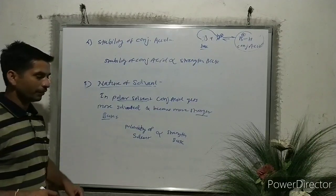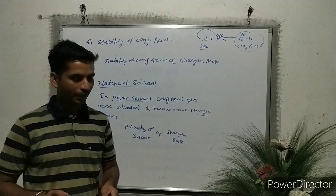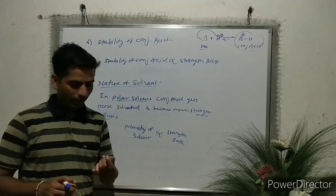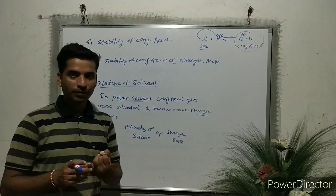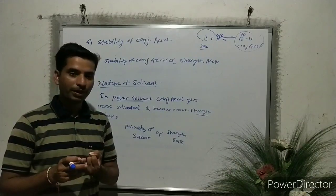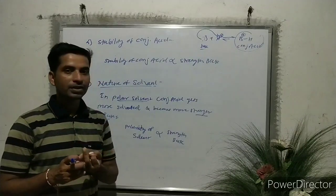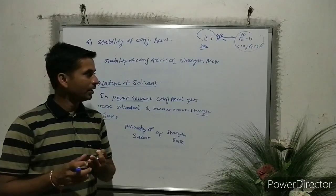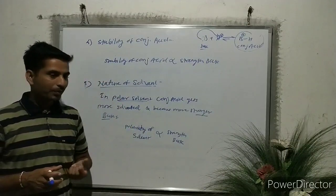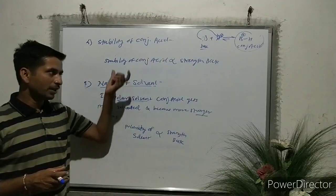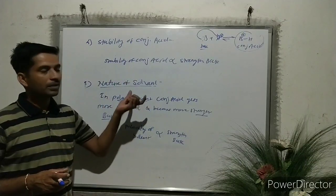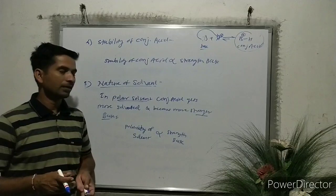These are the five factors which affect the strength of any base. The first factor is availability of electron pair on B. The second is electronegativity of B. The third is structural effect on B. The fourth is stability of the conjugate acid. And the fifth is the nature of the solvent. These five factors affect and determine the strength of the base. Thank you.